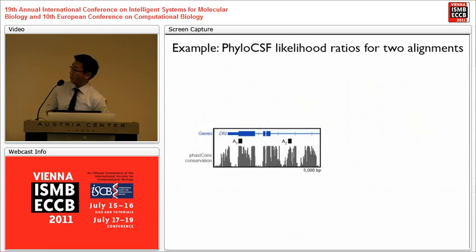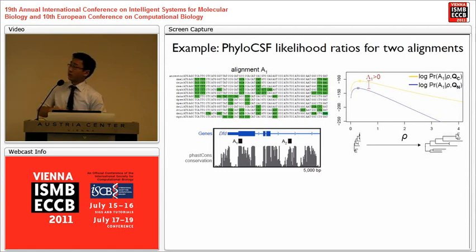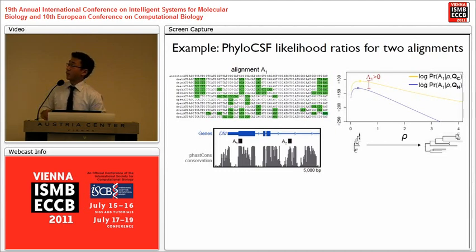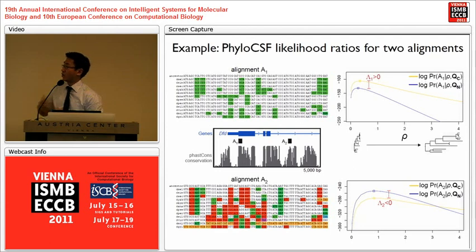In two examples from the deformed locus — alignment A1 from the protein-coding region and alignment A2 from an intron — the two curves show the likelihood surface over the tree scale parameter controlling for overall conservation. The yellow curve is the probability of the alignment under the coding model; the blue curve is probability under the non-coding model. The protein-coding alignment is much more probable under the coding model and gets a positive score. The non-coding alignment, though similarly conserved by percent identity, shows the blue curve well above the yellow, meaning that pattern of substitution is more probable under our non-coding model, so it gets a negative score.